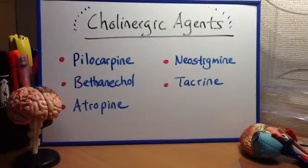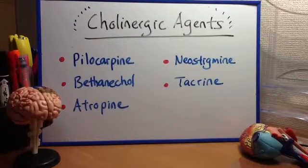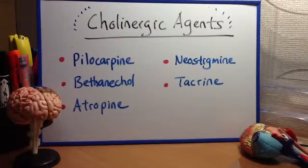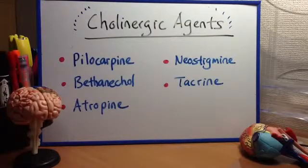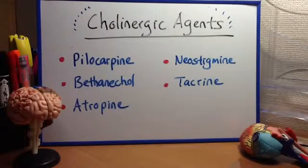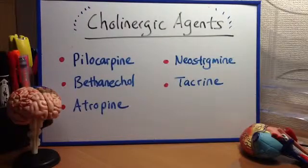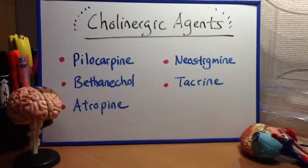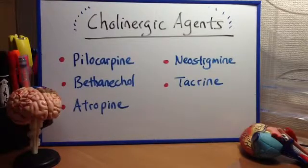Next, bethanacol. Bethanacol is a muscarinic M2 and M3 agonist. By stimulating the M3 receptor, this drug causes increased bladder contraction along with relaxation of the bladder sphincter, thereby promoting urination. M3 receptor stimulation can also result in increased gut motility. It is used to treat bladder atony in the postpartum or postoperative period. Side effects: mainly diarrhea.